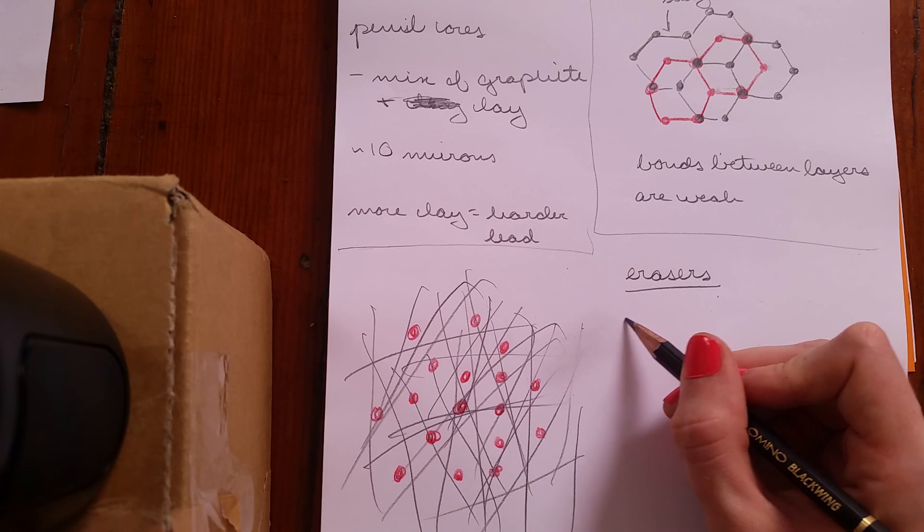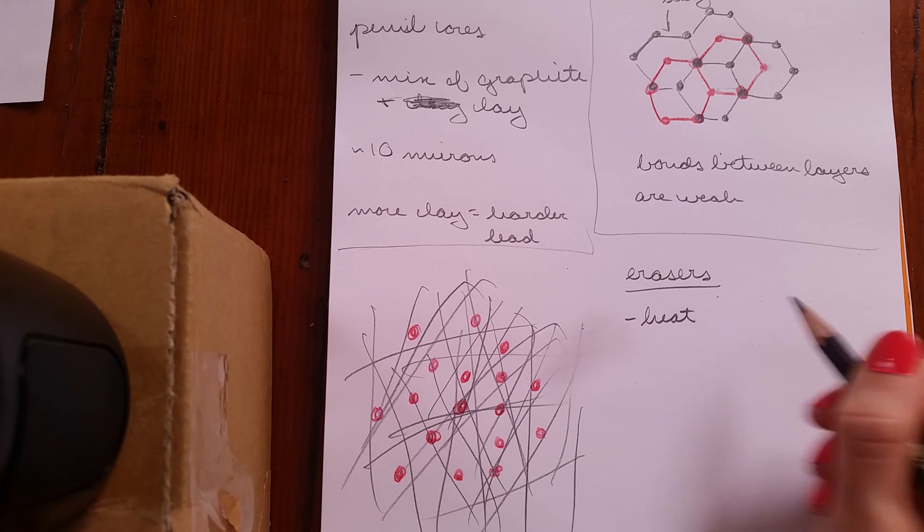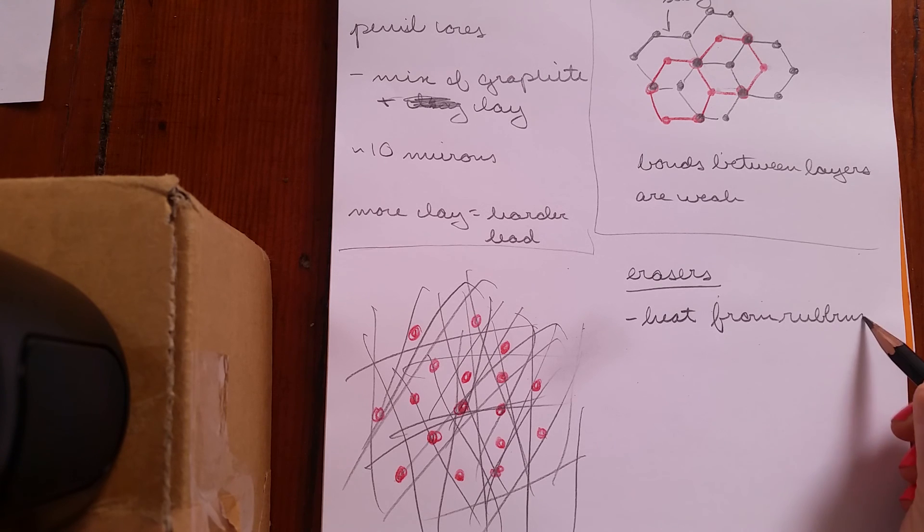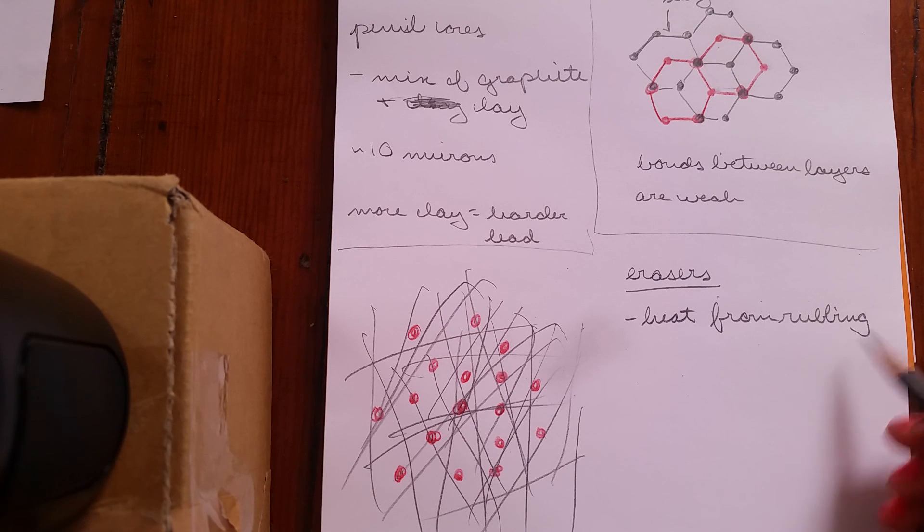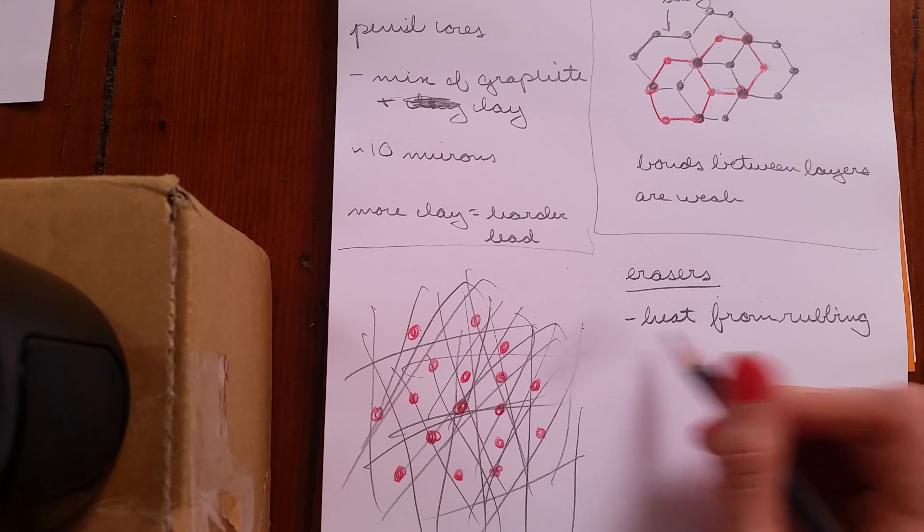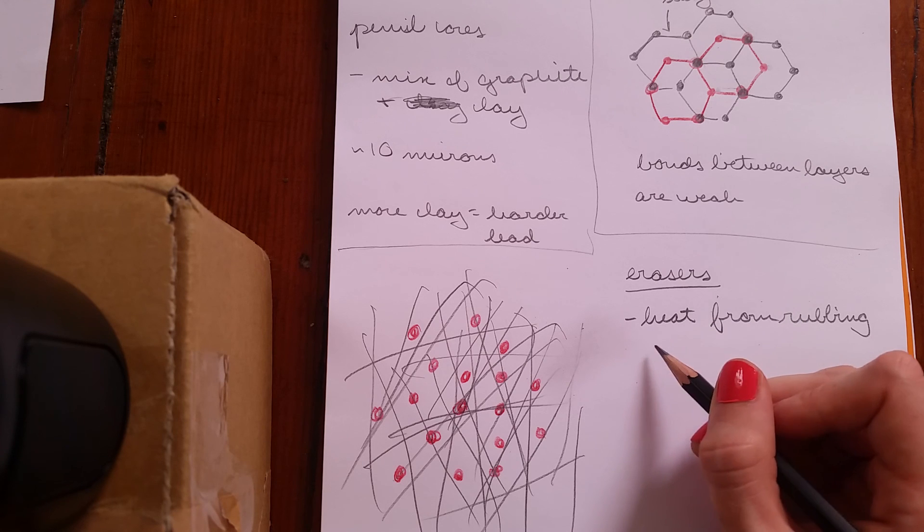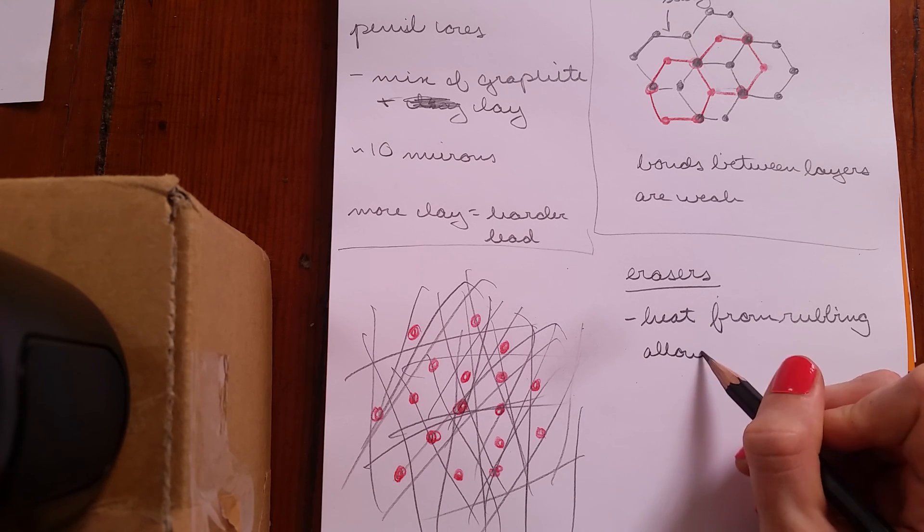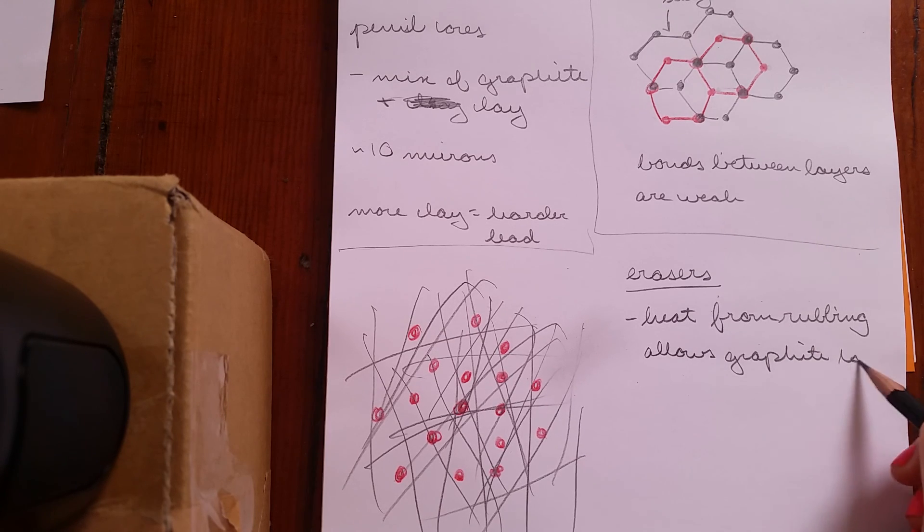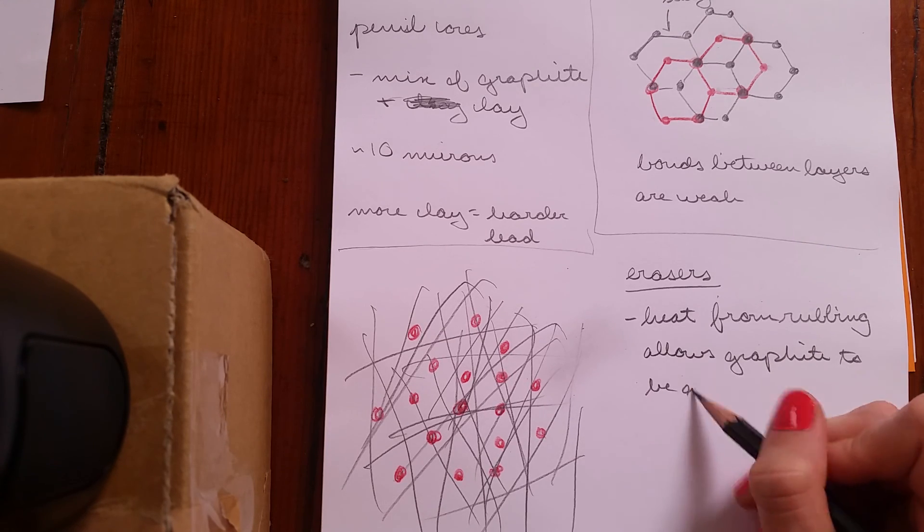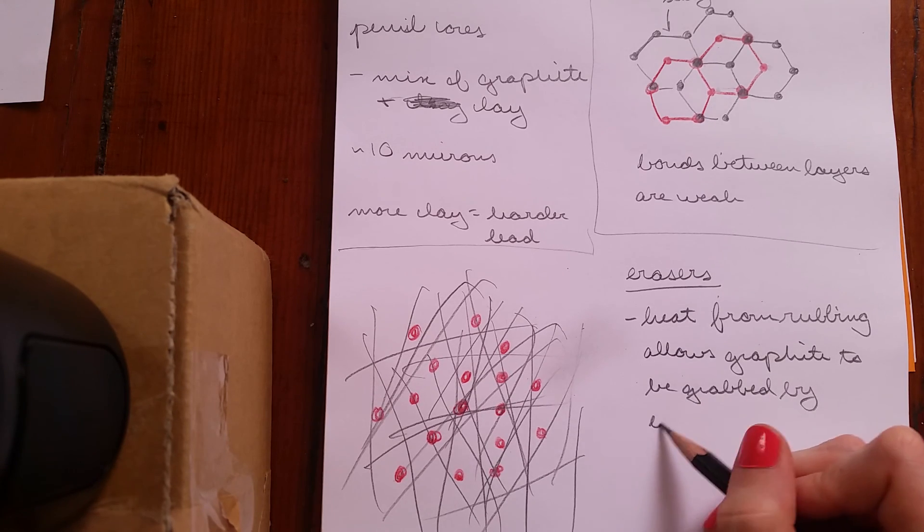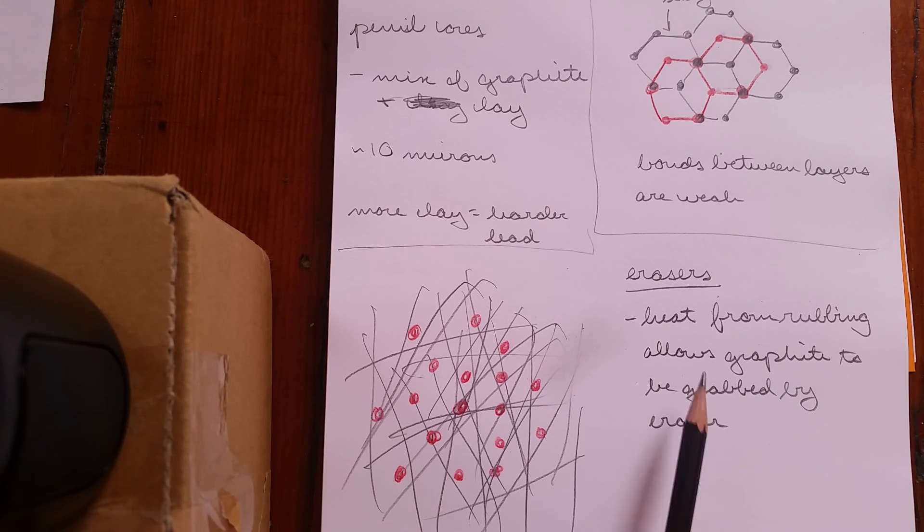So erasers, basically heat from rubbing, which in pretty much every other area of life is not such a good thing. Like rubbing, bad, bad, bad. That leads to chafing and that is not good. But basically here the heat from rubbing allows graphite to be grabbed by eraser.